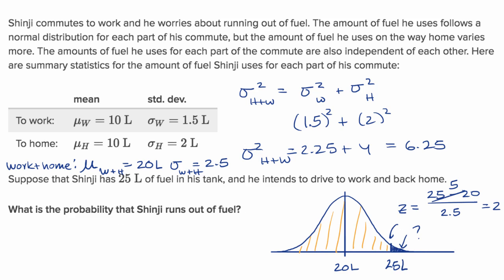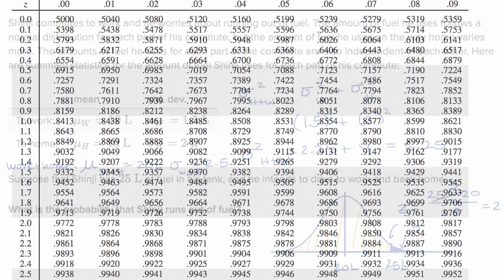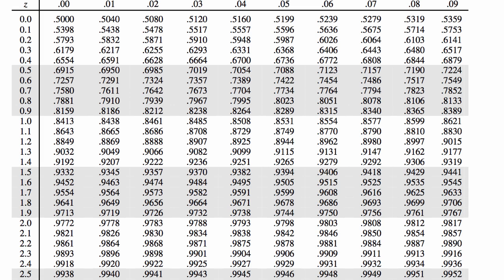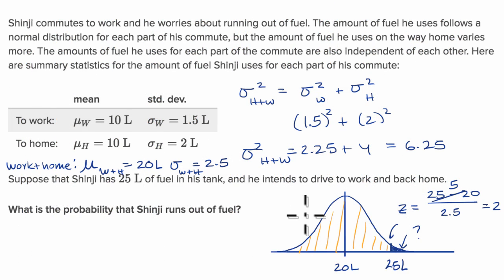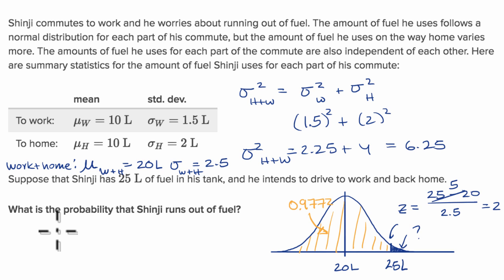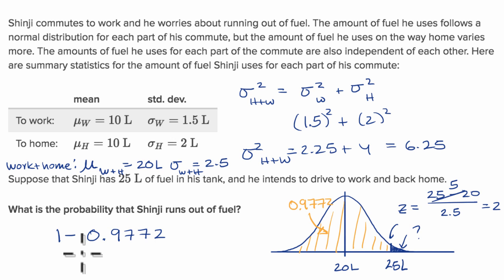Let's get the z-table out. We care about a z-score of exactly 2.00, which gives us 0.9772. So the cumulative area below 2 standard deviations above the mean is 0.9772. The probability that Shinji runs out of fuel — that blue area — is going to be 1 minus 0.9772.